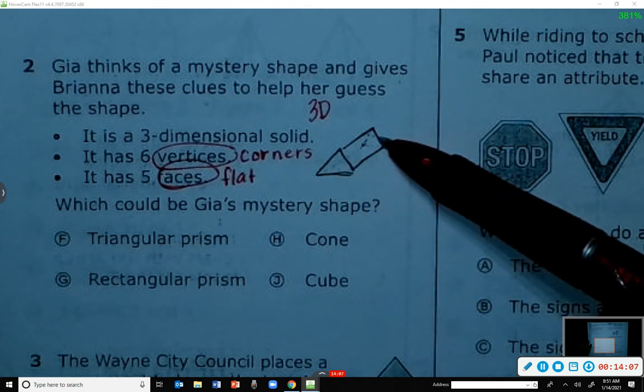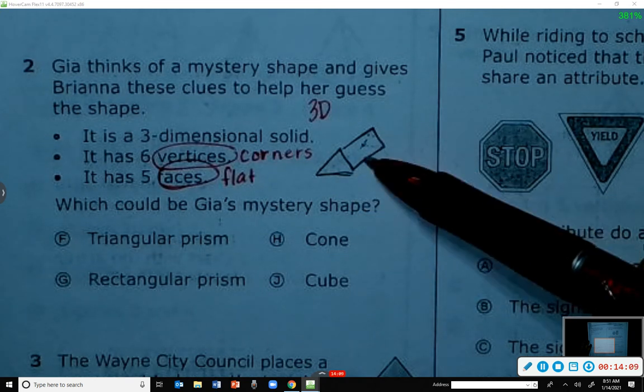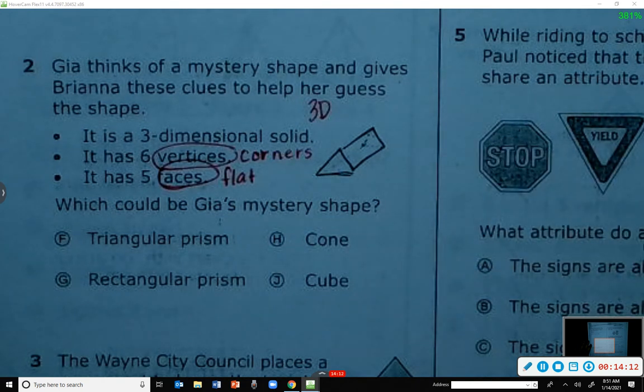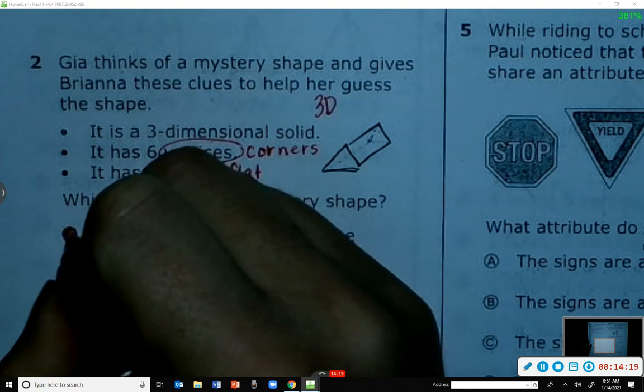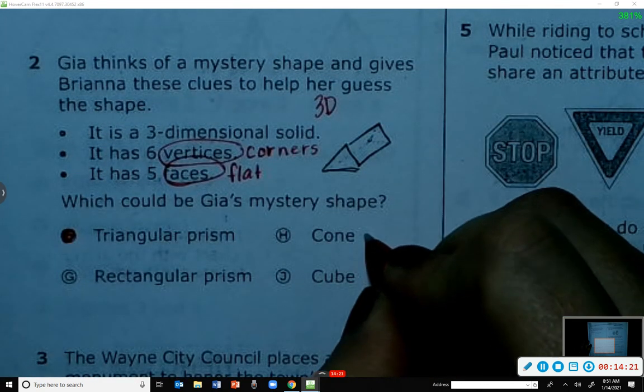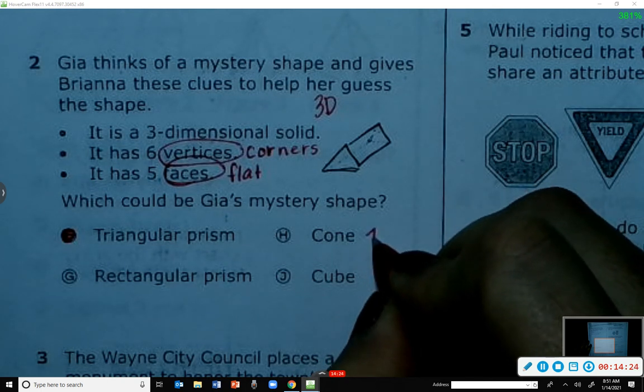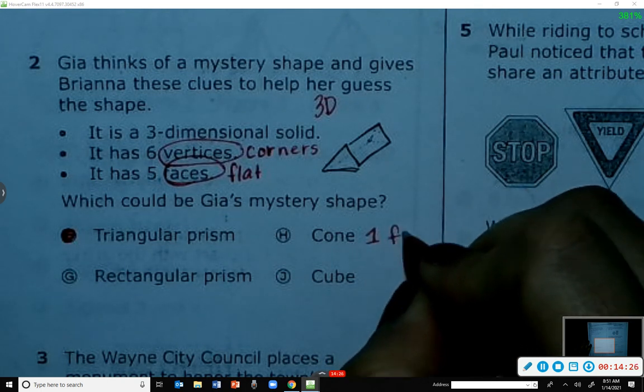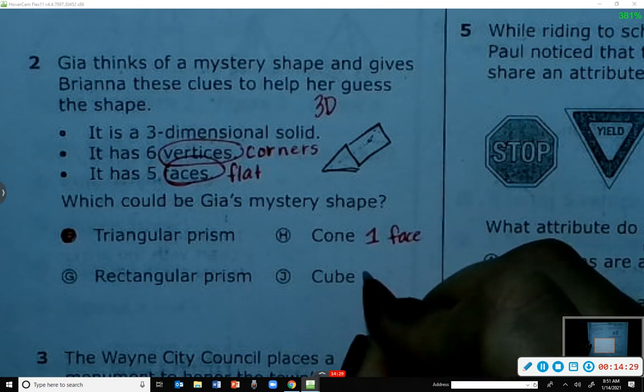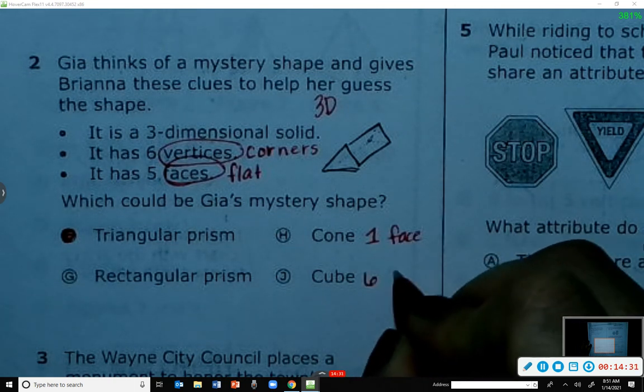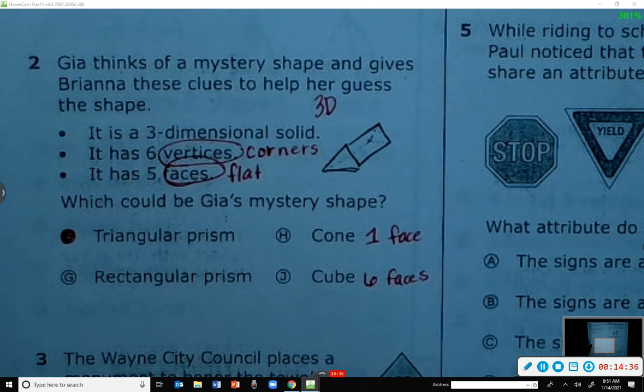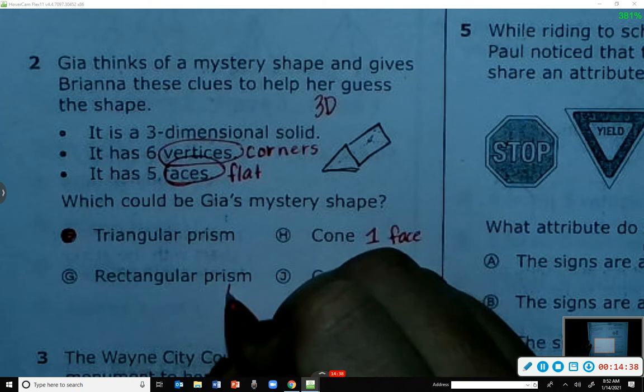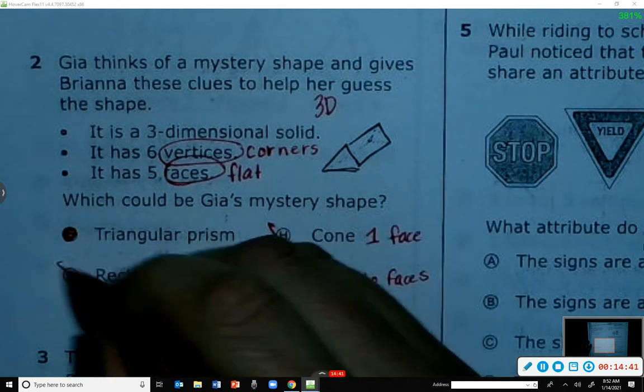So two triangles - the front and the back, the left and the right, and the bottom. That's five faces. So what would my answer be? Triangular prism. Because a cone only has how many faces? One. One face. A cube has how many? Six. Six faces. A rectangular prism has? Six. Good.